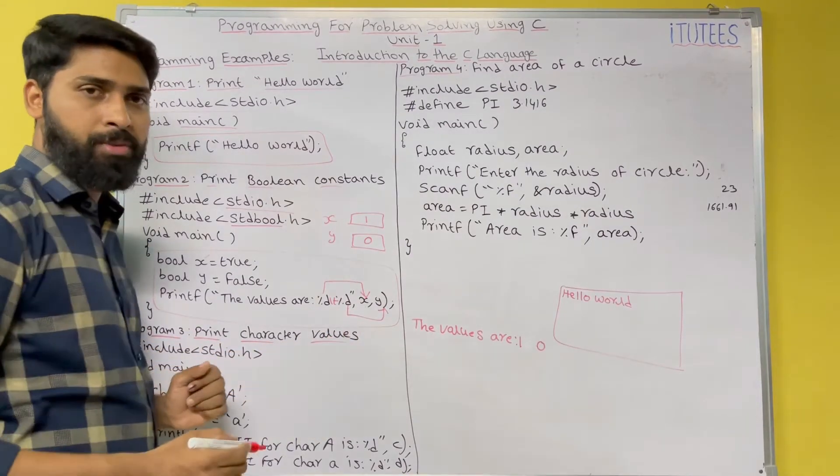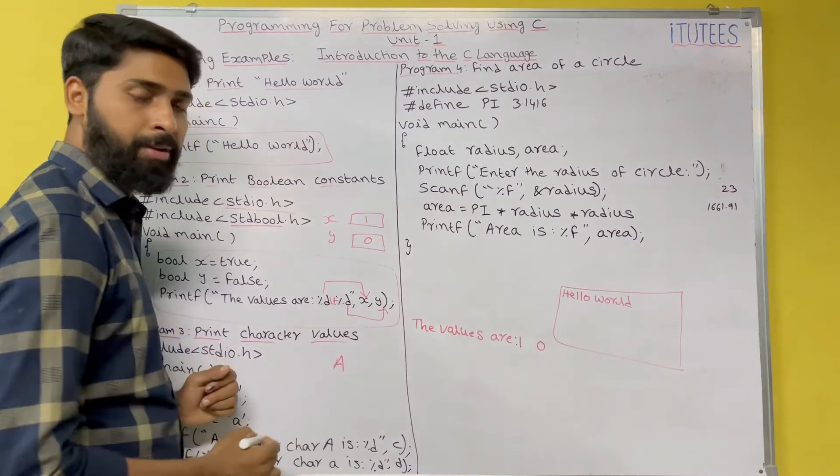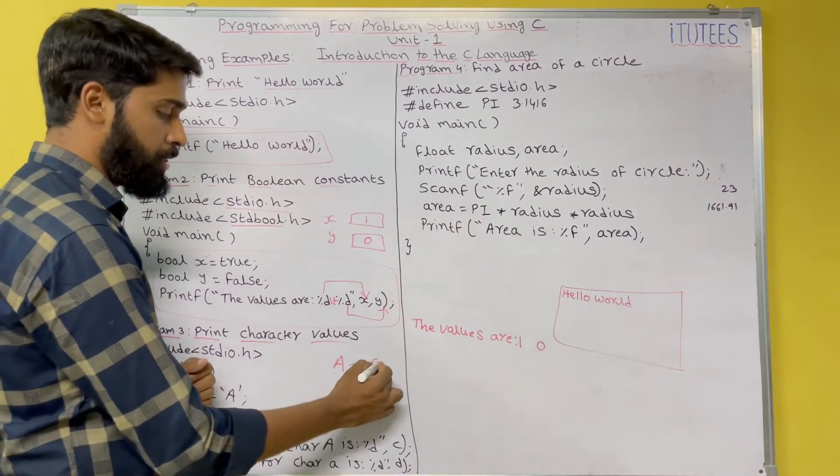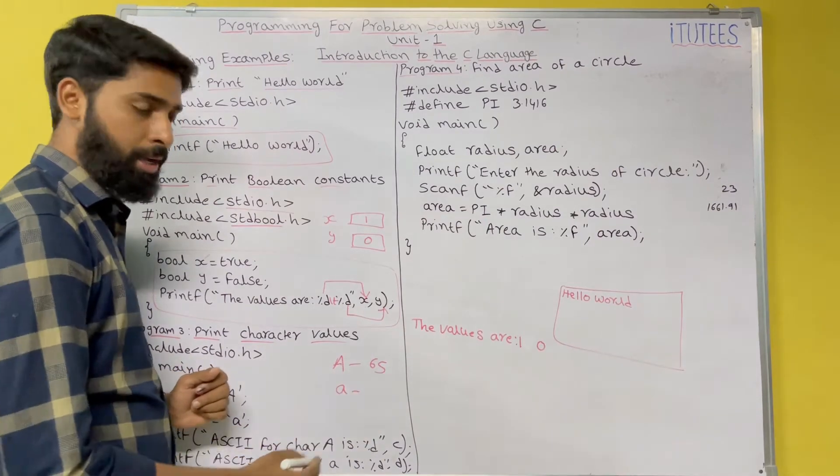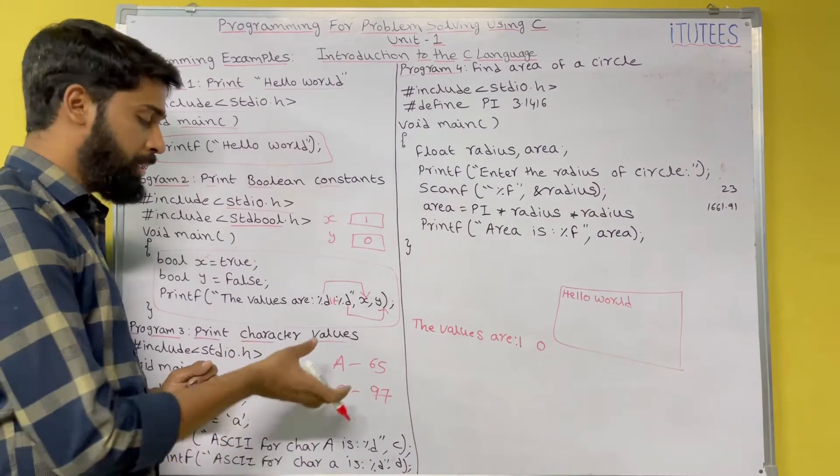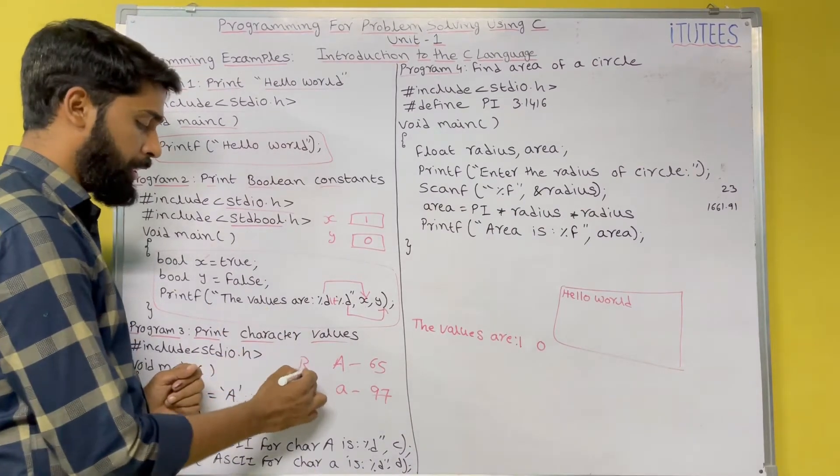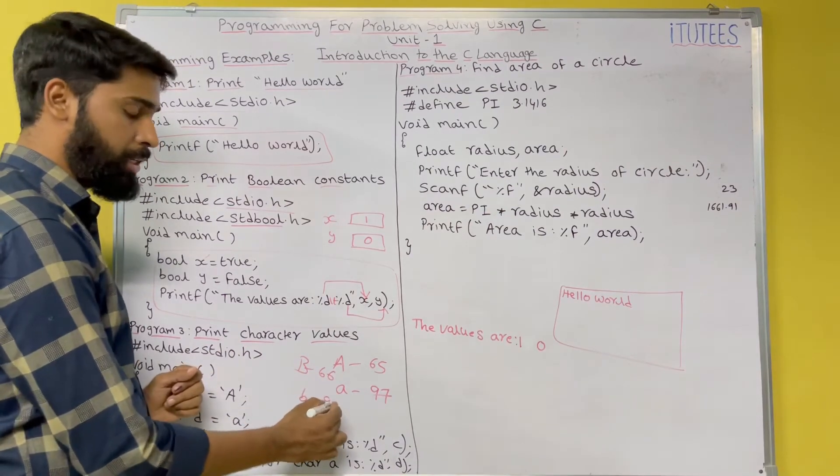Third program: print character values. For example, the character A, the value is 65. And similar to the character A, small a, the value is 97. Now, I want to print these values. For example, I want to print capital B value. Then, the capital B value is 66. Small b value is 98.